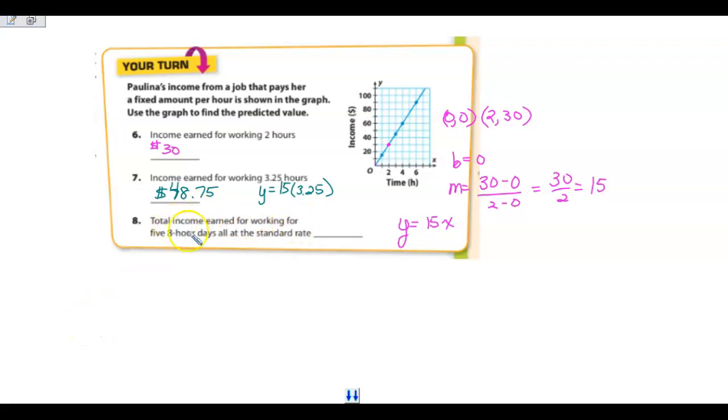Now find the total income earned for working 5 8-hour days all at the standard rate. So 5 8-hour days. So what's 1 8-hour day going to be? If you said that 1 day is going to cost you $120 or would earn her $120, you were correct. Now, it wants to know for 5 days. So what would you do there? Right, you're going to multiply the $120 by 5. And that's going to give you $600. So the amount earned for working 5 8-hour days is $600.